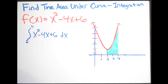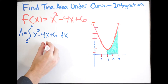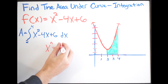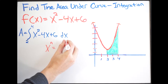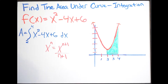We're trying to find the area under the curve, shown here in green, on the interval from 2 to 4. This integration is going to give us that area. To do this, we must first find the anti-derivative of our function. Going back to the fundamental theorem of calculus, we know that x to the n integrates to x to the n plus 1, all over n plus 1.